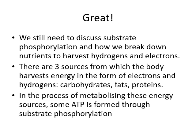We've discussed oxidative phosphorylation and the electron transport chain, but we haven't discussed substrate phosphorylation, or where these hydrogens come from in the first place. There are three sources from which the body can harvest energy: carbohydrates, fats, and proteins. In the process of breaking down carbohydrates, fats, and proteins, we get hydrogens and electrons for oxidative phosphorylation. We also make some ATP directly from enzymes — that's a process called substrate phosphorylation. So we're going to go through carbohydrates, fats, and proteins and see how we make ATP from these sources.